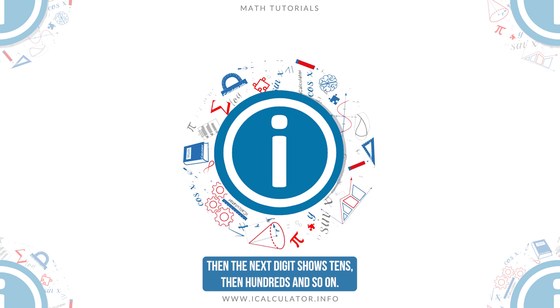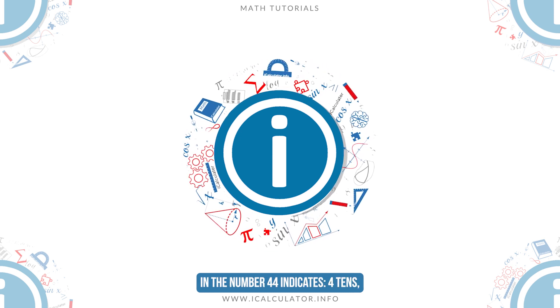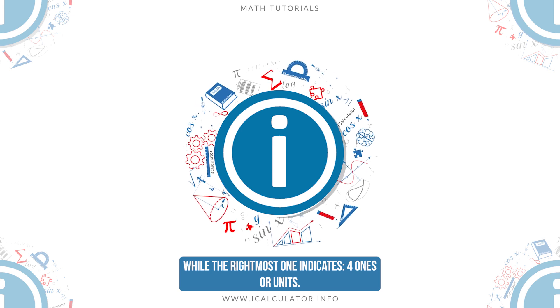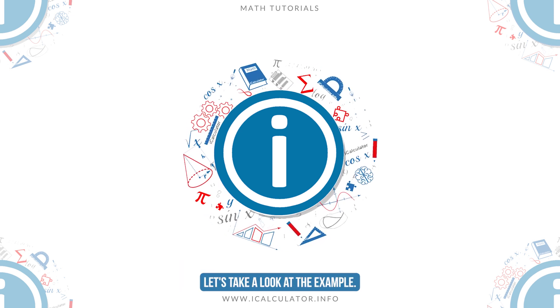For example, the leftmost digit in the number 44 indicates four tens, while the rightmost one indicates four ones or units. Let's take a look at an example.